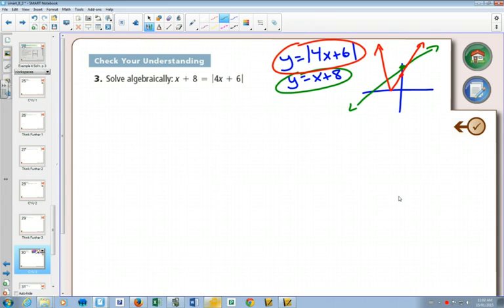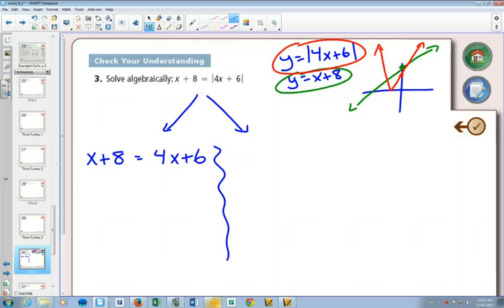Now, again, the way that we solve this is we split it up into two sections. Algebraically, we split up one where we assume that the inside is positive and just take away the absolute values. We also do another one where we assume the inside is negative.